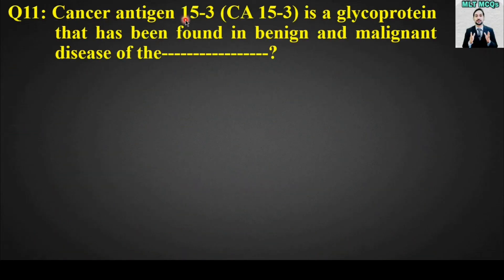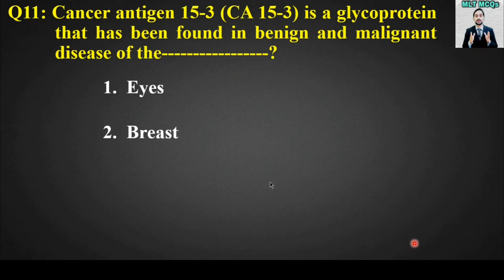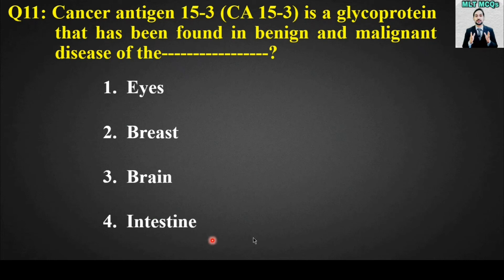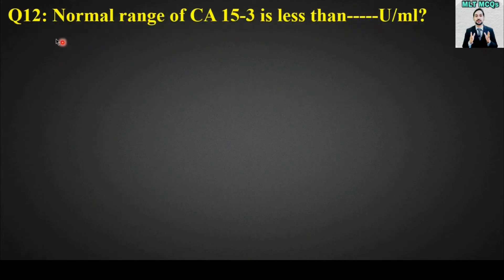MCQ number eleven: Cancer antigen 153 (CA-153) is a glycoprotein that has been found in benign and malignant disease of the blank. Options are eyes, breast, brain, or intestine. The right answer is option number one: breast. CA-153 is a glycoprotein found in benign and malignant disease of the breast.